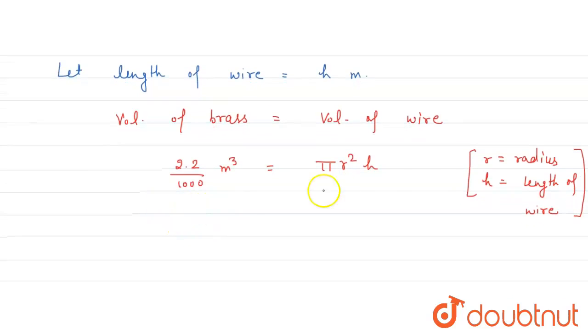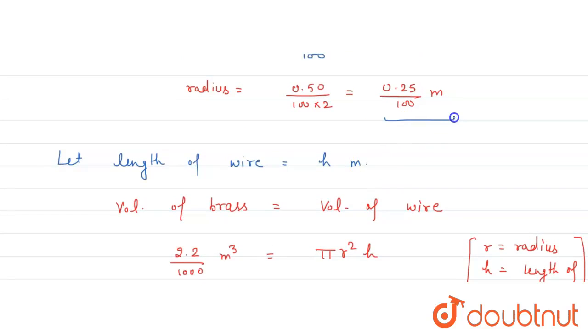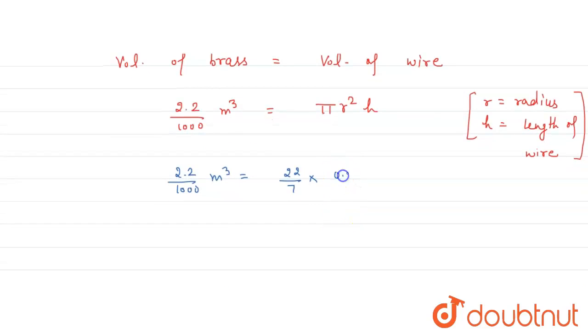Now substitute all the values. So 2.2 upon 1000 meter cube, this is equal to value of pi is 22 upon 7, value of radius is 0.25 upon 100, again 0.25 upon 100 multiplied by h.